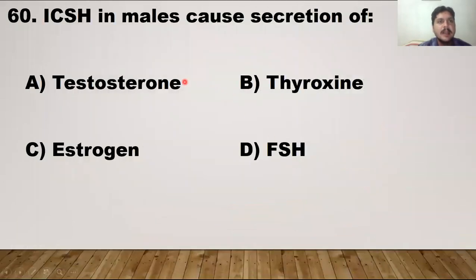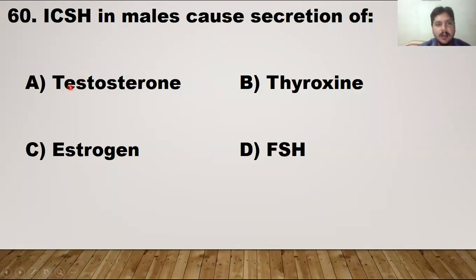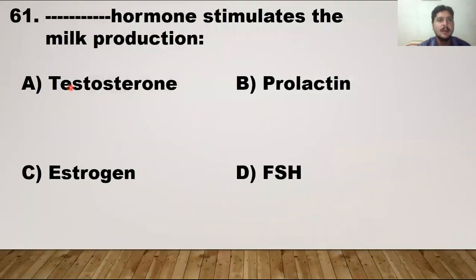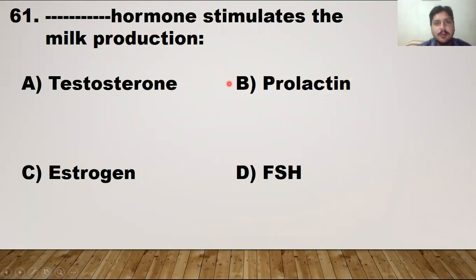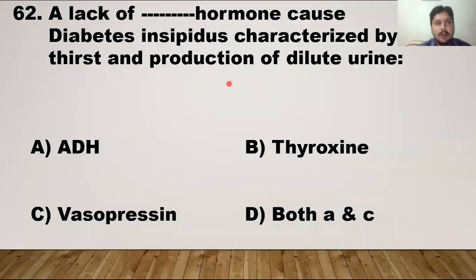MCQ number 60: ICSH — interstitial cell stimulating hormone — stimulates the interstitial cells in the testes of the male and causes secretion of testosterone, which controls the secondary sexual characters in the human male. For MCQ 61, prolactin is the hormone that involves male production. Option B is the right answer.